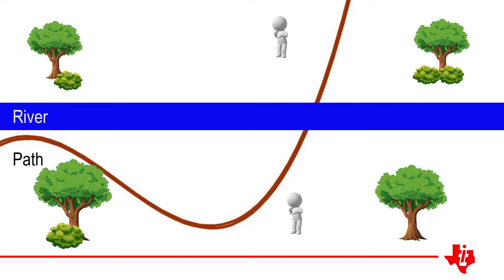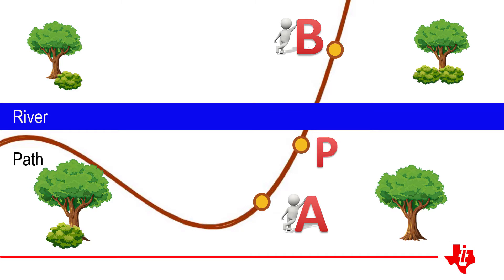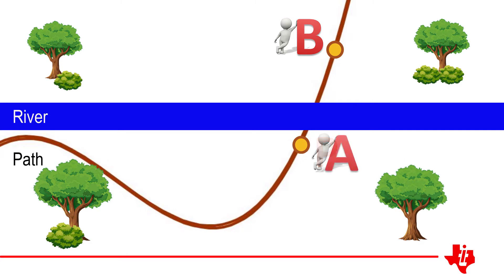Pick a point somewhere along the path from A to B — let's say P. If we are still on the original side of the river, then we must cross the river somewhere between P and B. Otherwise, we have already crossed. And so the problem starts again by reassigning the location of A to P, in the case where we are yet to cross the river. Each iteration gets closer to finding the river crossing.